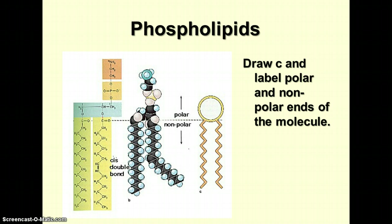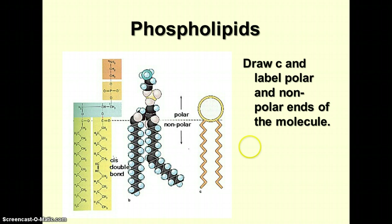Here are three diagrams of phospholipids. On the left, we have a structural formula showing the relationship of the two fatty acid chains with the glycerol molecule, and here's the phosphate group with another group attached to it. This is a space-filling model, and this simplified diagram is what you should recognize from class. If you haven't already done this in your notes, you need to draw this structure and label the polar head and the nonpolar ends of the molecule. Pause and then pick up right after this.